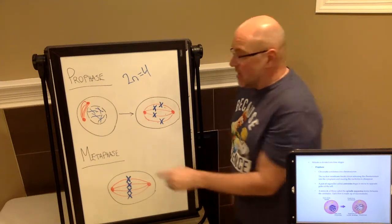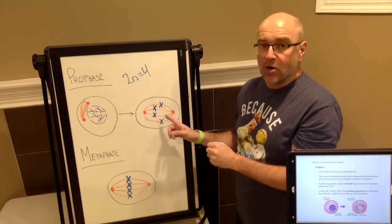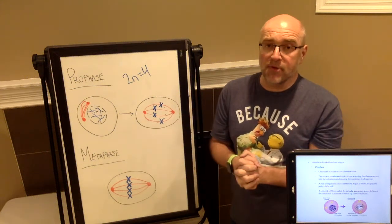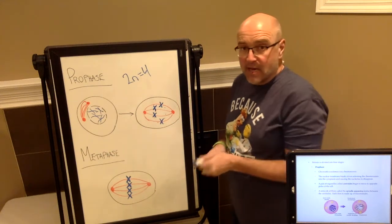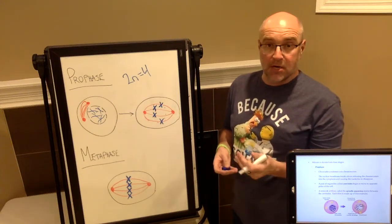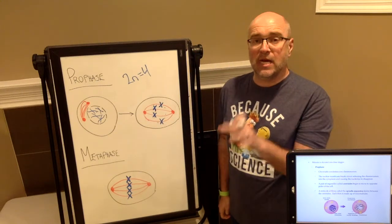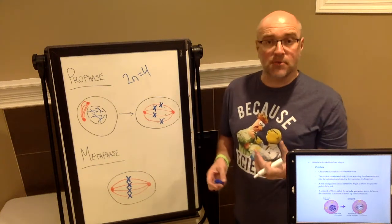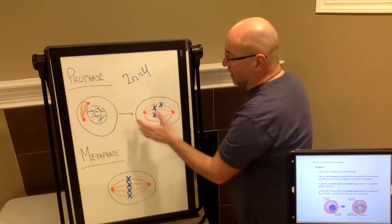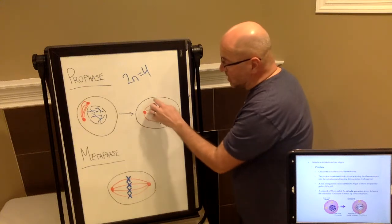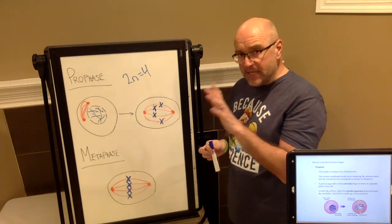As prophase continues, the centrals actually extend out to opposite ends of the cell. So you'll have one central on opposite sides of the cell creating a network of spindle apparatus. You'll notice that there is one spindle apparatus or a set of spindle apparatus for every section of DNA. Something you might have also noticed is that our DNA here is much thinner than over here. We are looking at our chromatin condensing into our chromosomes.